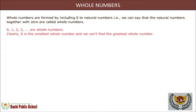0, 1, 2, 3, and so on are whole numbers. Clearly, 0 is the smallest whole number and we can't find the greatest whole number.